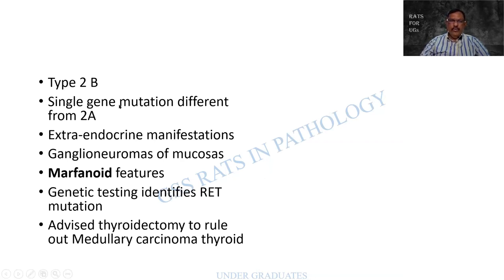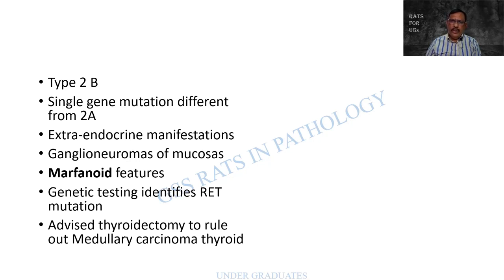MEN2b involves a single gene mutation, different from 2a, and can have extra-endocrine manifestations. MCQ examples: pheochromocytoma is classical of which MEN type? Sippel's disease is classical of which type? Extra-endocrine manifestations are seen in which type? Extra-endocrine features include ganglia neuromas and marfanoid features. Genetic testing identifies the RET mutation, and patients are advised to have a thyroidectomy to rule out medullary carcinoma.